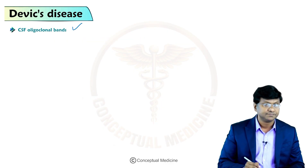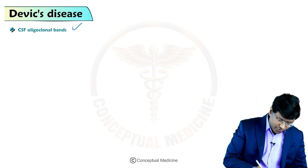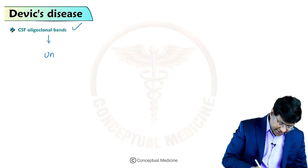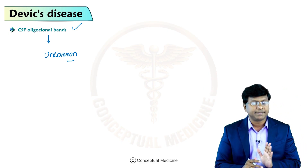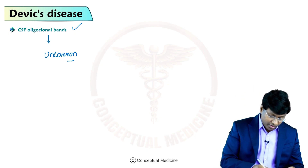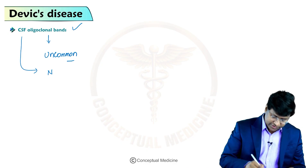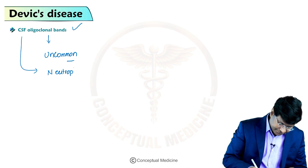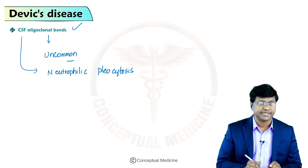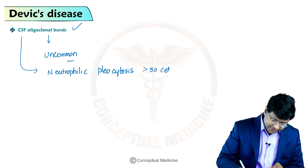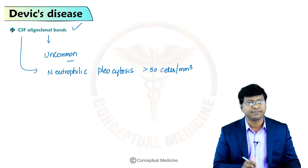On CSF analysis, oligoclonal bands may be present, but their presence in neuromyelitis optica is uncommon — whereas they are very common in multiple sclerosis. What the CSF will show in Devic's disease is neutrophilic pleocytosis, that is more than 50 cells per cubic millimeter.